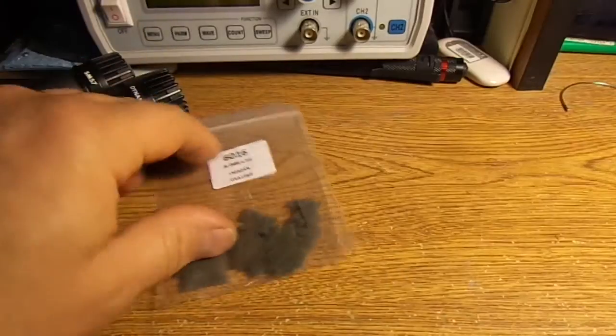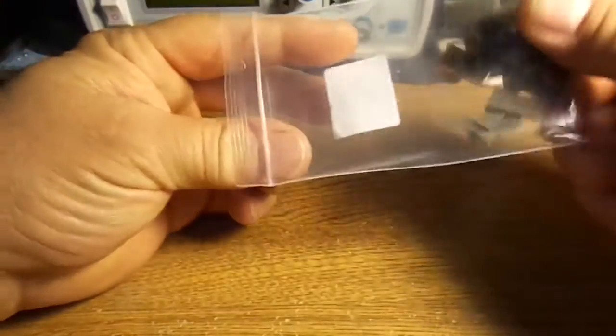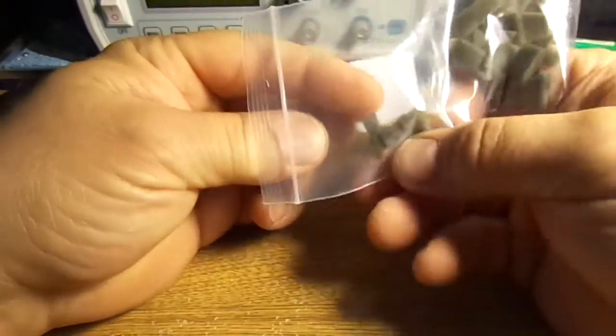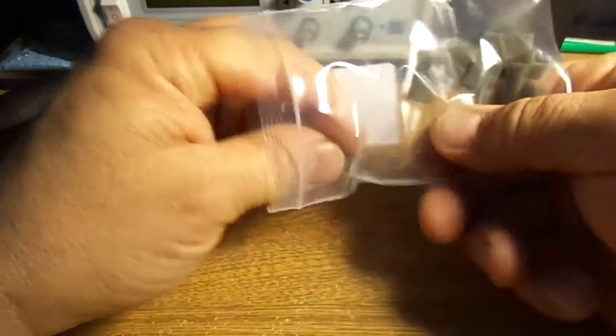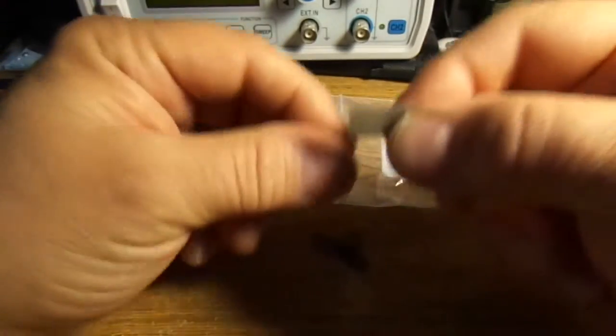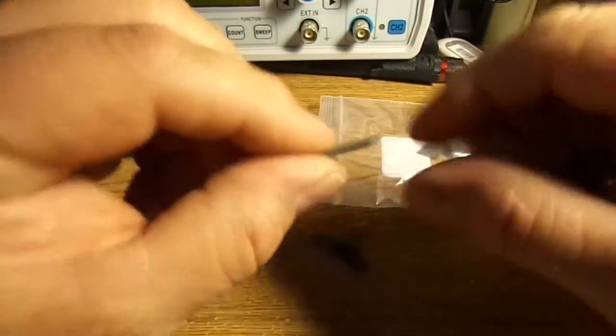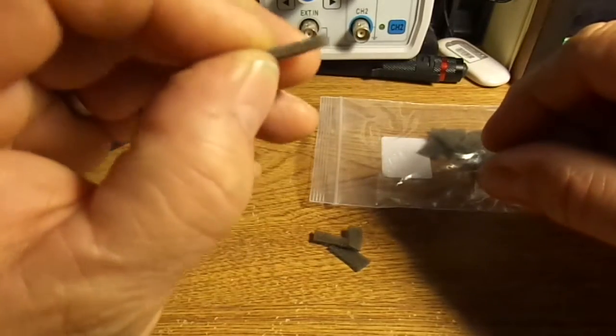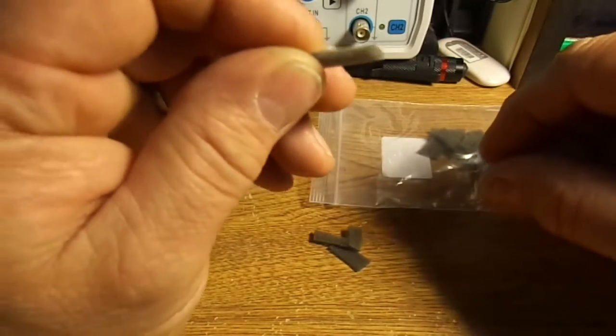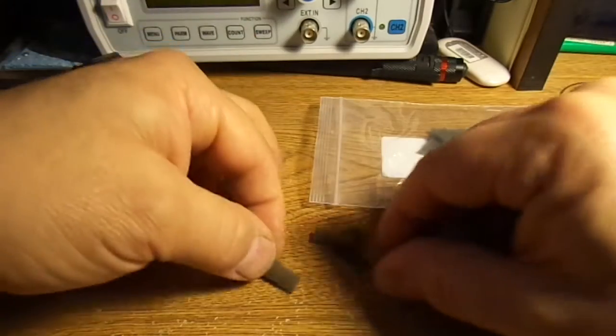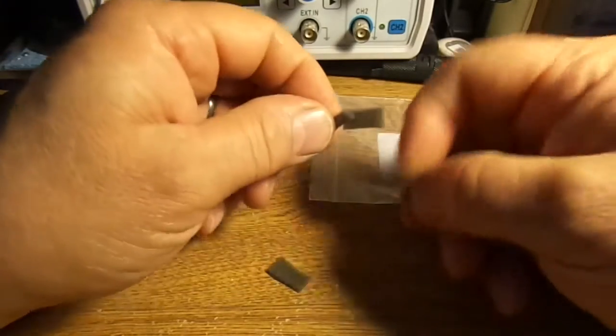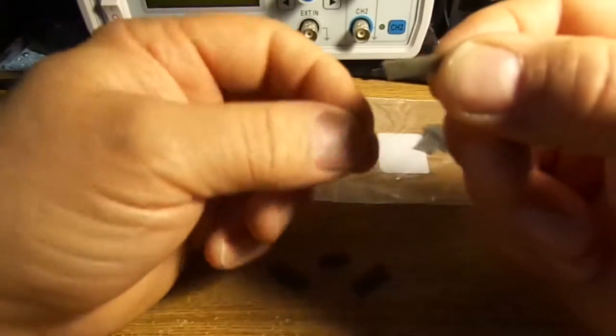So here they are. This is not the part number. This is the ziplock that I already had. But basically these are little tiny pieces of foam. Real thin. It looks like about a sixteenth of an inch. And it's kind of random cuts.